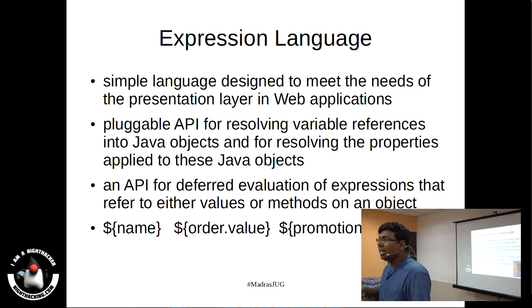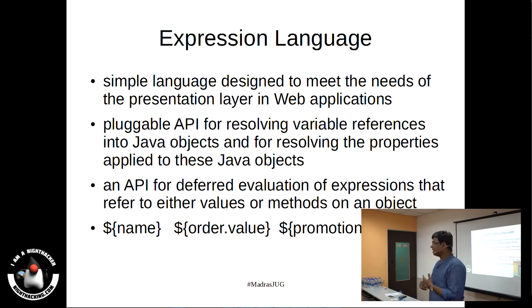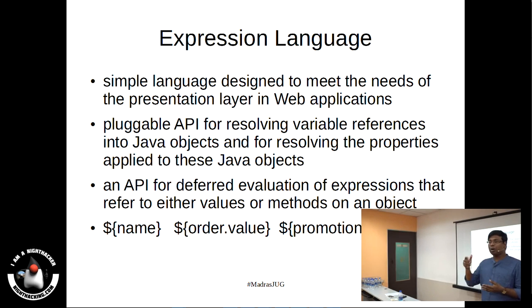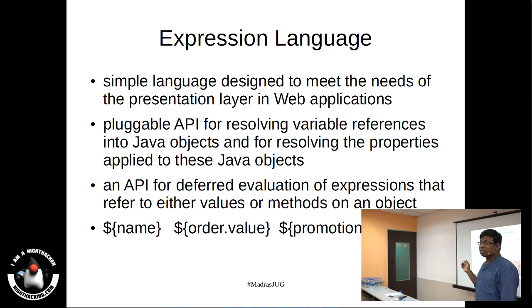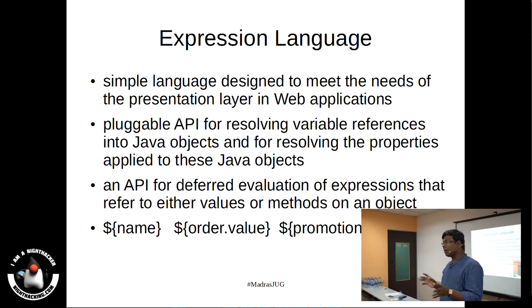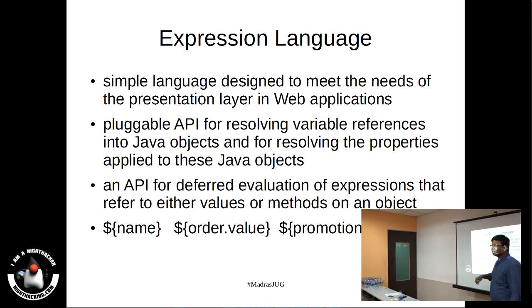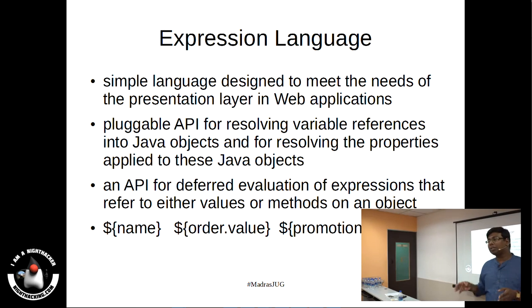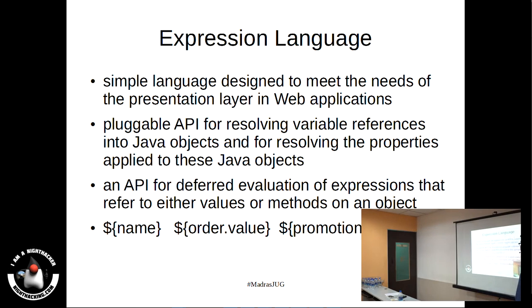Generally when we need to write it we say request.getParameter, then session.getAttribute, then context.getAttribute — all those things need not be written anymore; they go behind the scenes. The expression language is evaluated and resolved automatically. So order.getValue in your Java code would be something like request.getAttribute of order and then order.getValue — but expression language makes this much more concise, easier to read, and easier for JSP page authors to write.